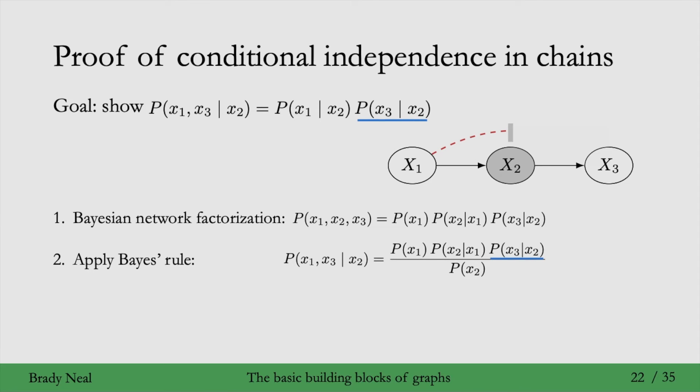And then if we notice that we already have one of the terms that we want to end up with, p of x3 given x2, then we know that we just need to turn this stuff in the red box down here in step two into the stuff in the red box up in our goal. That's how we can complete the proof.